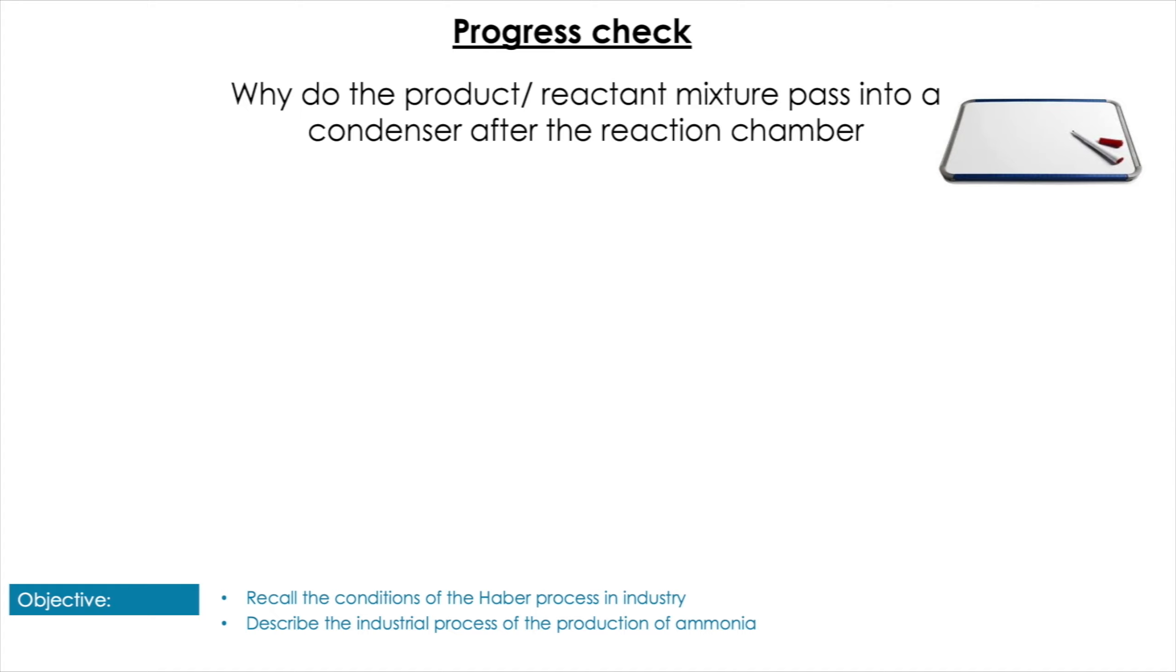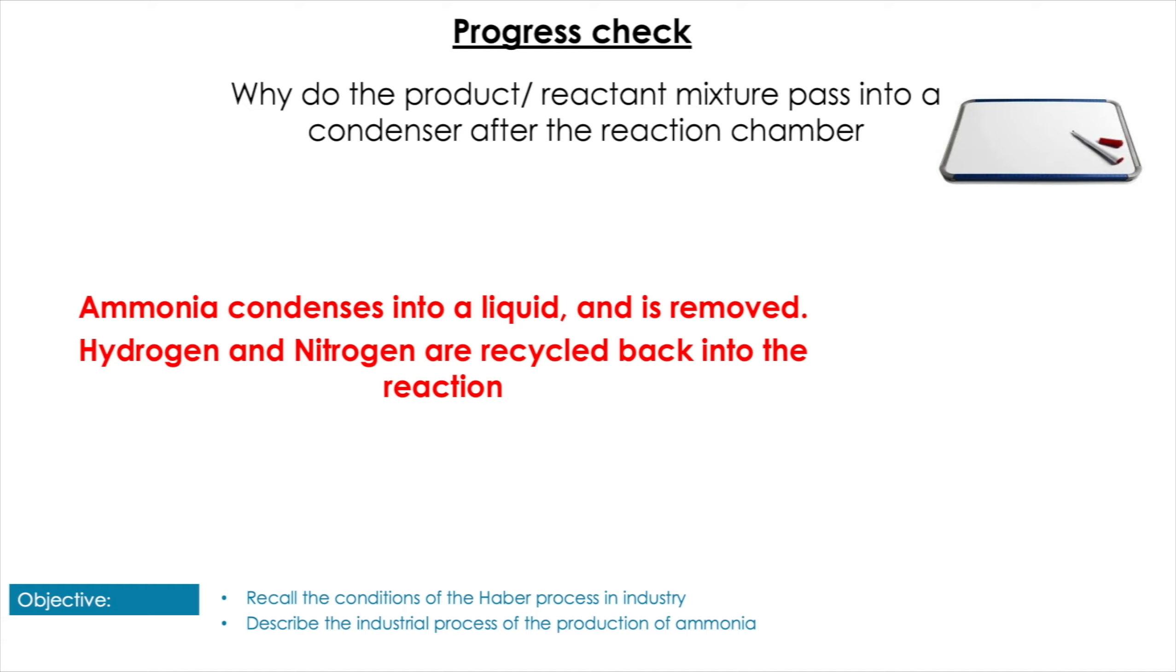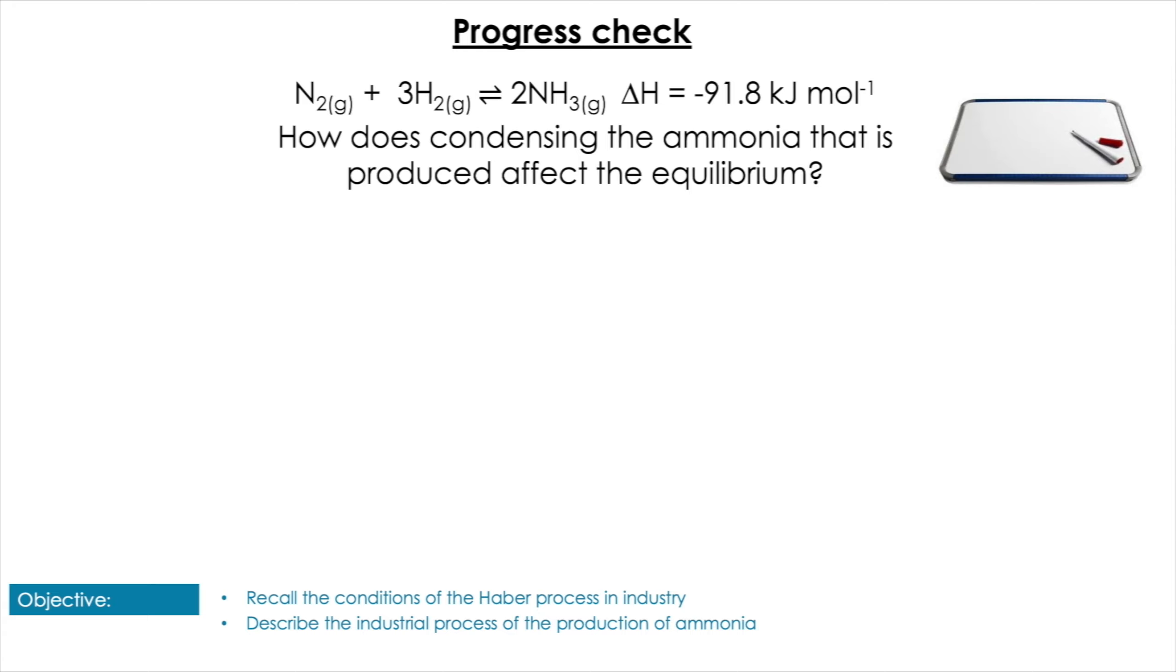Next question is: why do the product-reactant mixture pass into a condenser after the reaction chamber? Pause the video here to give yourself some time for that. And of course, the ammonia is condensed and removed as a liquid, and the remaining hydrogen and nitrogen are recycled back into the reaction chamber.